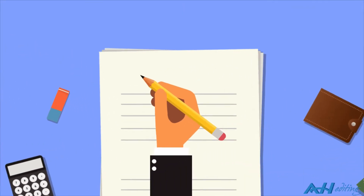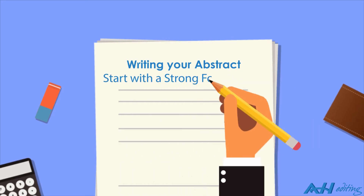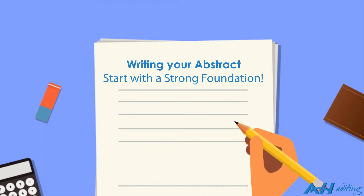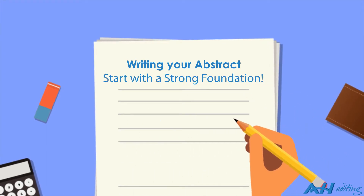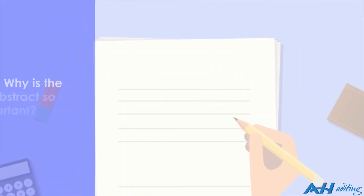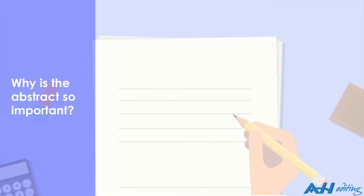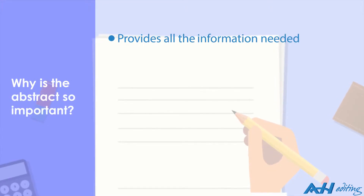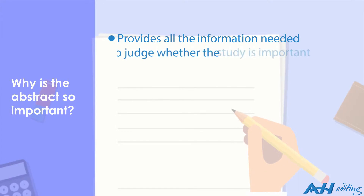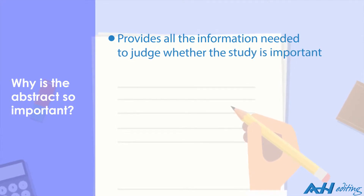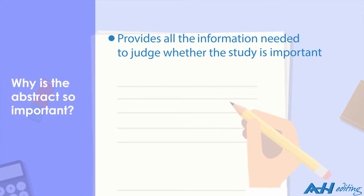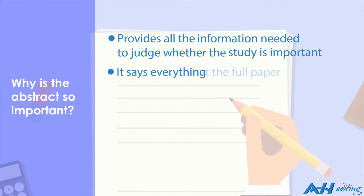Today we're going to look at the basic structure of an abstract. First, let's think about why your abstract is so important. It provides all the information potential readers need to judge whether the study is important. It's a self-contained piece of writing — it says everything that the full paper says, but in brief.